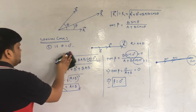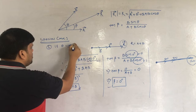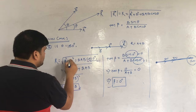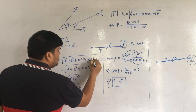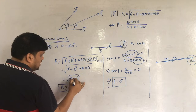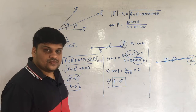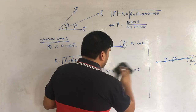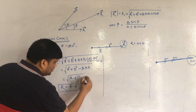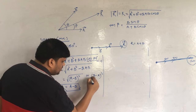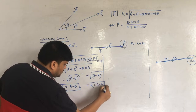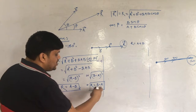Special Case 2: if θ = 180°. Putting cos180° = −1 into the formula: R = √(A² + B² − 2AB) = √(A−B)². So R = |A−B|, which can be written as A−B or B−A depending on which is larger.